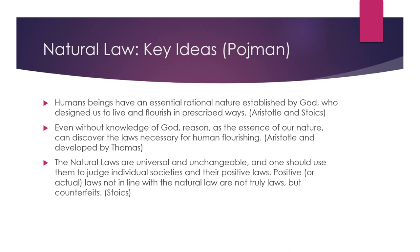Some of the key ideas coming from natural law — relying on Pojman — humans have an essential rational nature established by God, who designed us to live and flourish in prescribed ways. We first see this from Aristotle and the Stoic philosophers, whose concept of God was something like a monotheistic God — not the Greek cultic gods of the Greek pantheon. But the idea is that humans are essentially rational and have a design or a way that we should live.